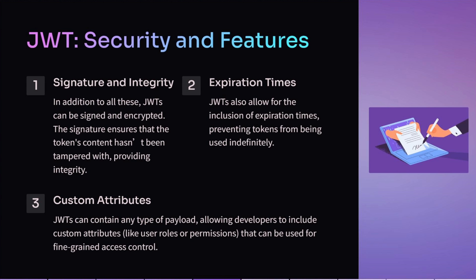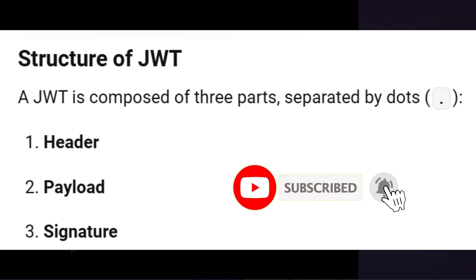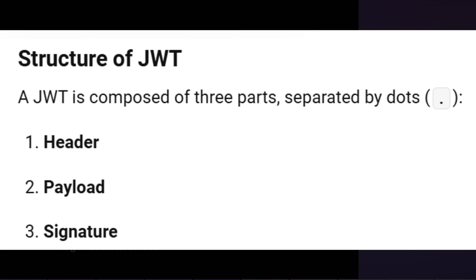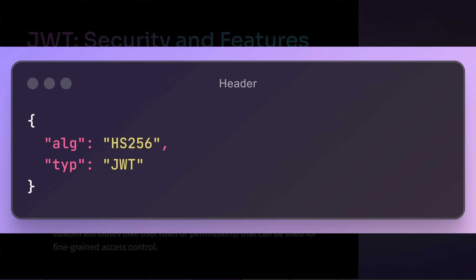Let us try to understand the structure of the token. A JWT has three parts separated by dots. These components are header, payload, and signature. The header typically consists of two things: first, the type of token, which is JWT, and second, the signing algorithm being used, such as SHA-256, RSA, or any other. This is how it looks as a JSON, and this JSON is then encoded to base64. This becomes the first part of the JWT.